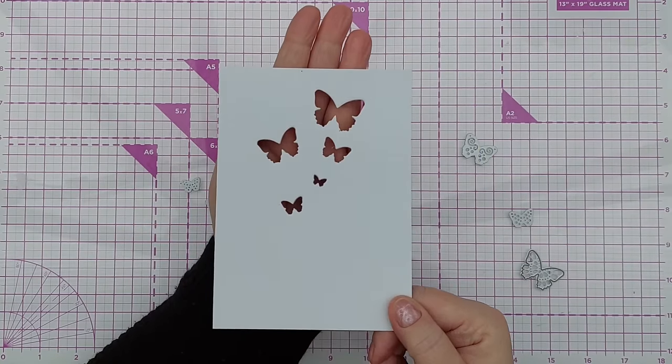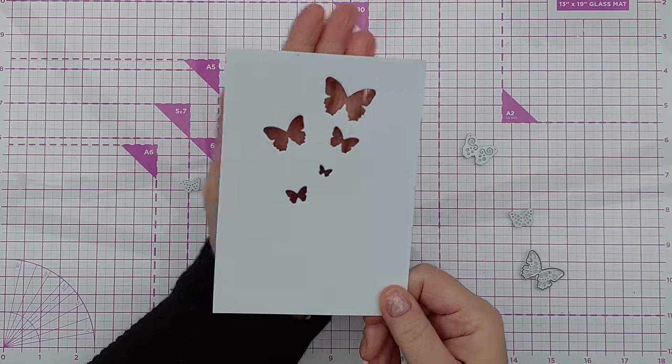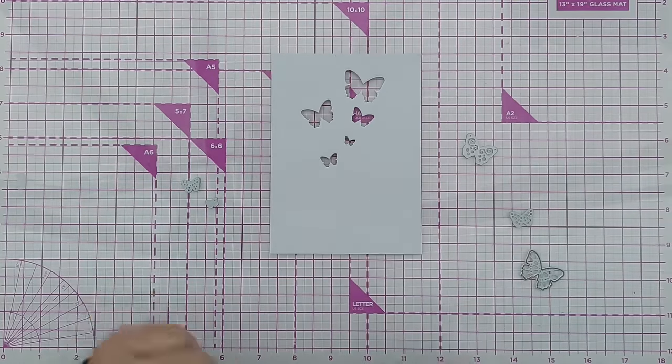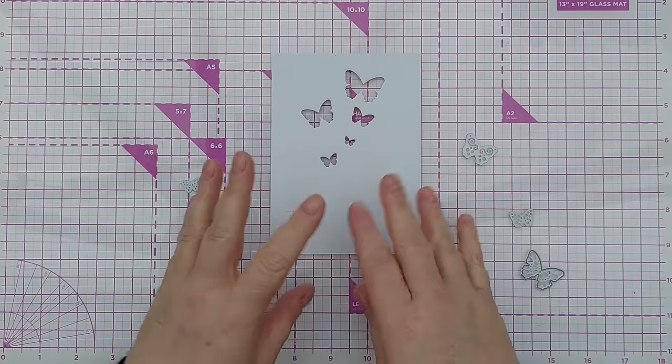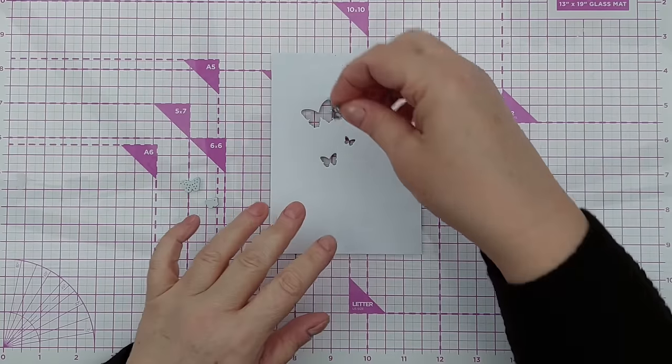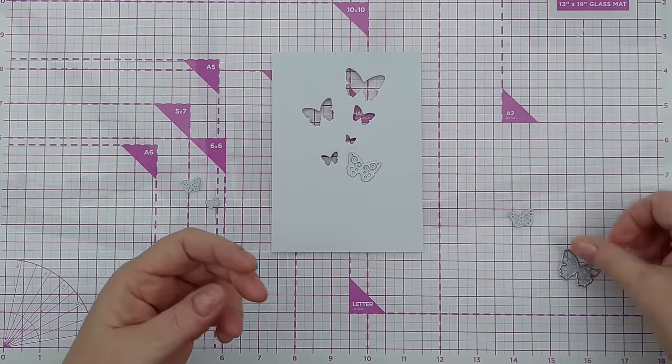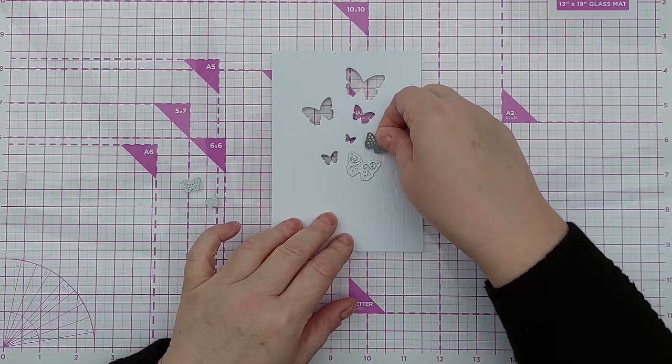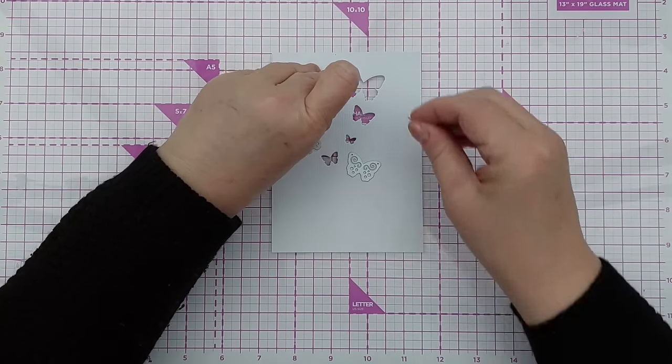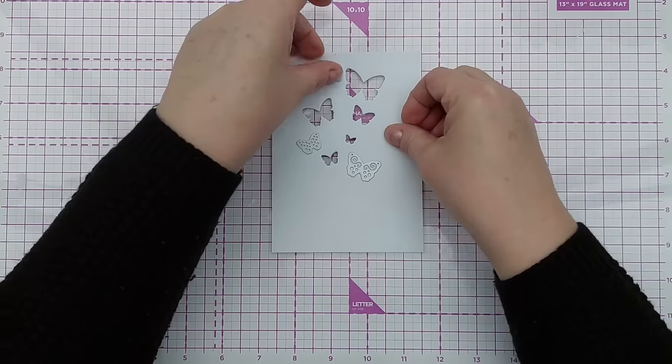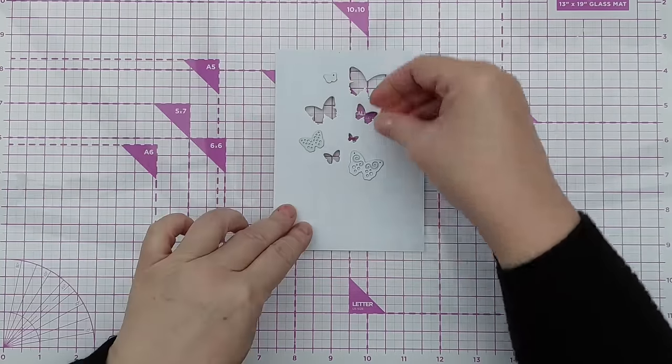Then run it through your die cutting machine. So this is the kind of thing you get. With these dies I've got butterfly shaped holes in my card. The beauty of using individual dies with this is that you can create your own unique aperture and you can run it through more than once by adding in your dies again and running it again through your die cutting machine, which is what I'm going to do now.